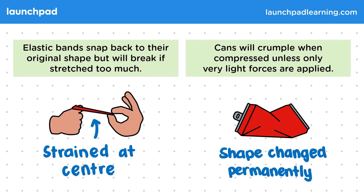The materials used to make an object determine how much force is needed to cause inelastic deformations. You don't need to remember these specific examples of deformation, but these are common examples that you might be asked to analyse and explain in an exam.